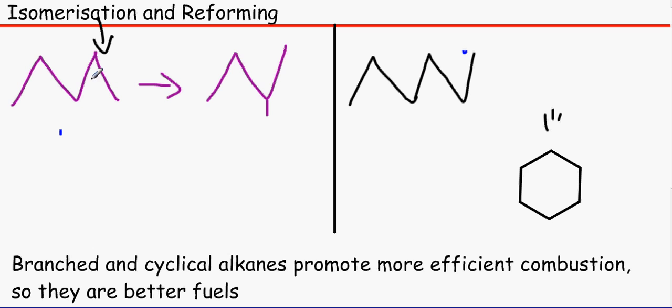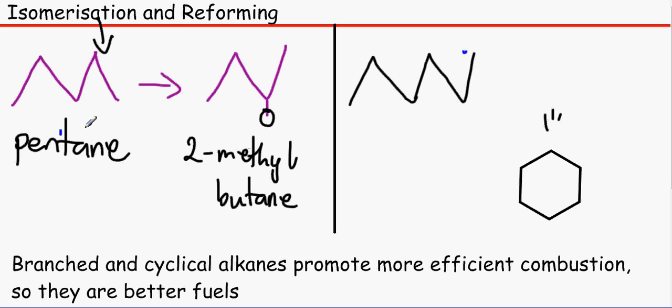It has gone from pentane, 1, 2, 3, 4, 5 carbons, to 2-methylbutane because it is a methyl group over here: 1, 2, 3, 4 butane. As you can see, this is a chain isomer because we still have 5 carbon atoms and CnH2n plus 2, 12 hydrogen atoms.